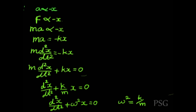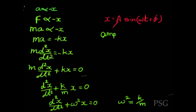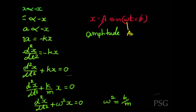The solution to this second-order differential equation is x = A·sin(ωt + φ). This equation satisfies d²x/dt² + ω²x = 0. In this equation, A is called the amplitude — the maximum displacement from the mean position — and ω is called the angular frequency, also called angular velocity.